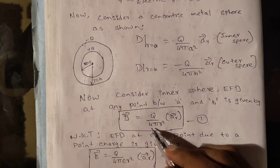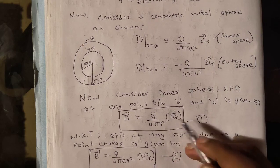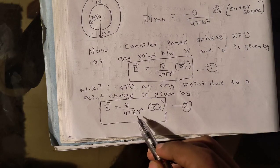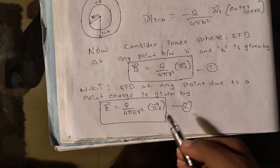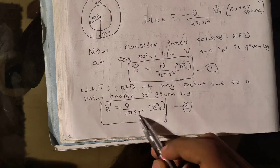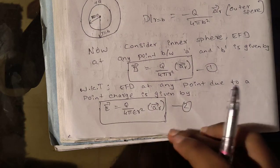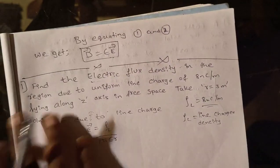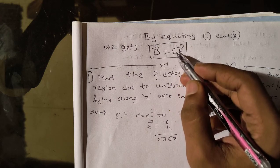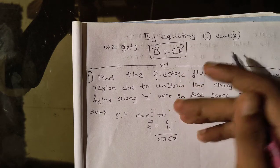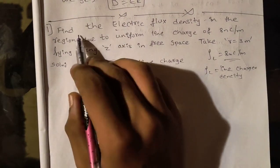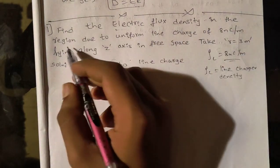Now consider inner sphere. EFT at any point between a and b is given by flux density equals Q divided by 4πr² aᵣ. Then electric flux is Q divided by 4πε₀r² aᵣ vector. By equating these two, we get density as electric flux density as ε₀ times E.